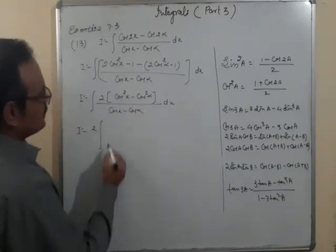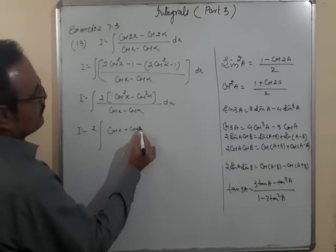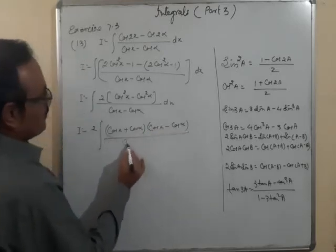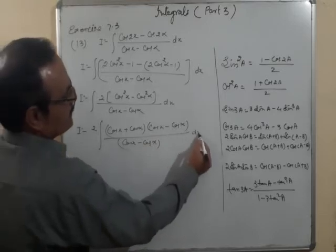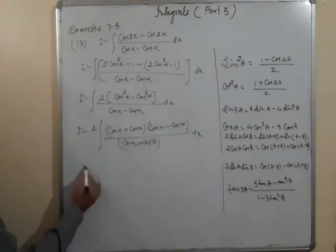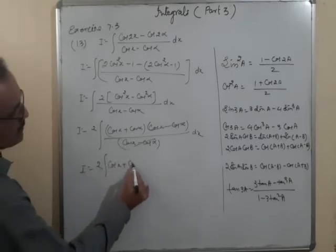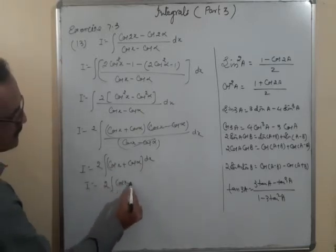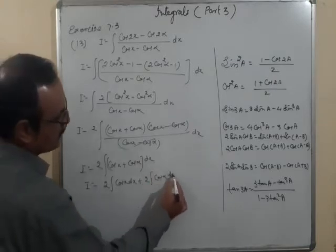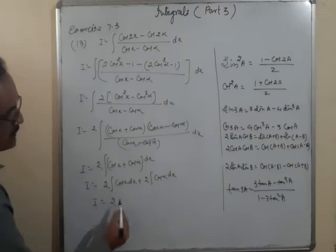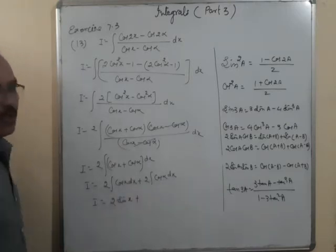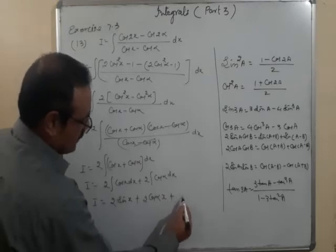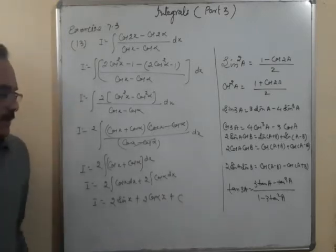Using A² − B² = (A+B)(A−B): 2(cos²x − cos²α) = 2(cosx + cosα)(cosx − cosα). Dividing by (cosx − cosα), it cancels. So I = ∫2(cosx + cosα) dx = 2sinx + 2x·cosα + C, since cosα is a constant.